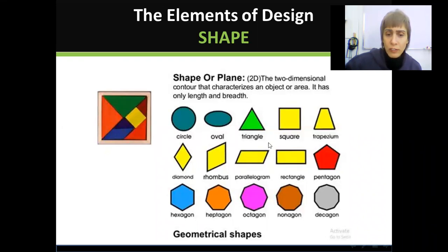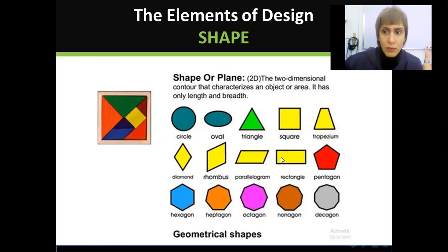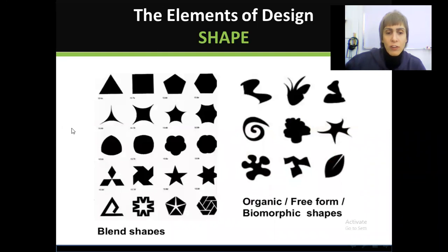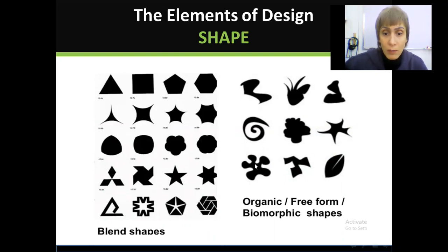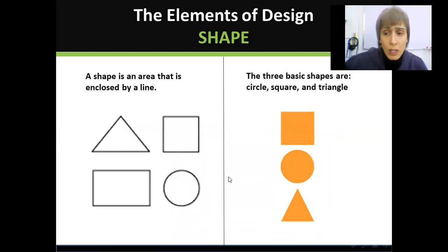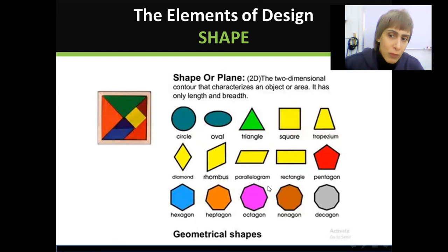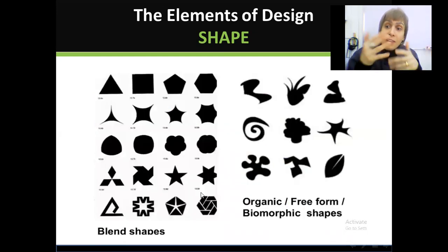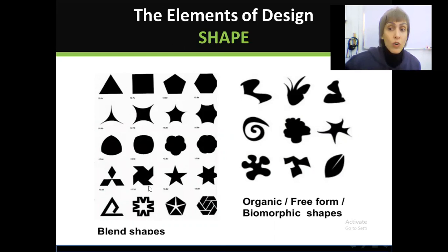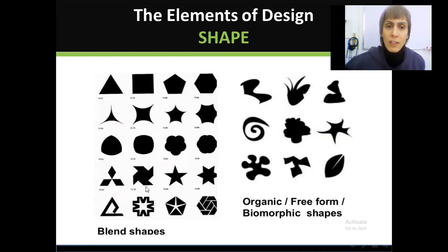The circle, the oval — all of these shapes are known and have their own names. But look at these shapes, for example — these are blended shapes, meaning they are made from the basic shapes, possibly combining some of the other geometric shapes blended together. And look at the result: you create so many different new shapes by blending the basic shapes together.